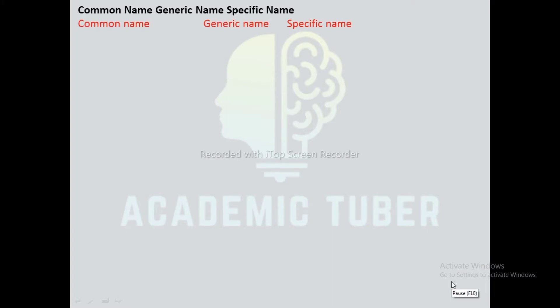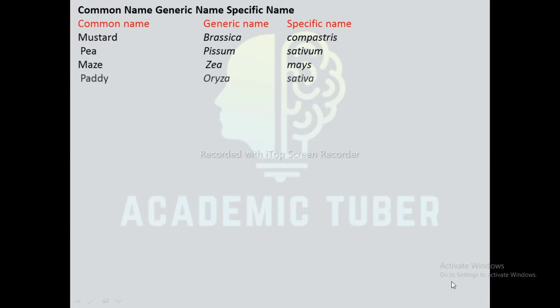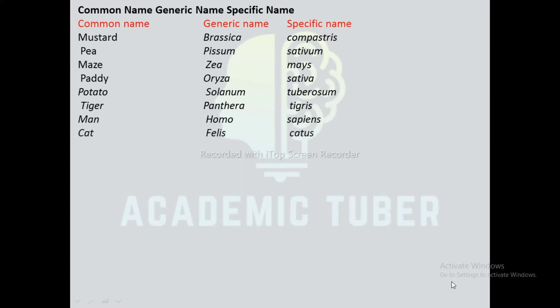Some common scientific names of organisms: Mustard - Brassica campestris, Pea - Pisum sativum, Mango - Mangifera indica, Paddy - Oryza sativa, Potato - Solanum tuberosum, Tiger - Panthera tigris, Man - Homo sapiens, Cat - Felis catus, Dog - Canis lupus, Cow - Bos taurus, Lion - Panthera leo.